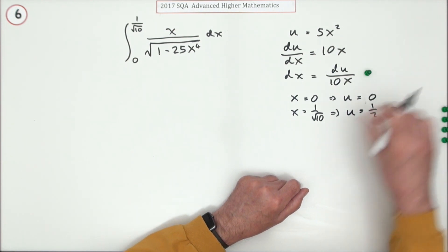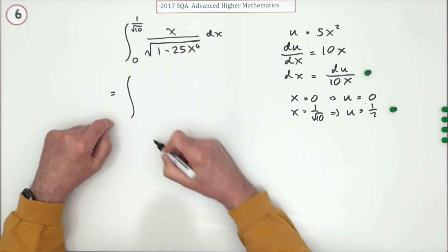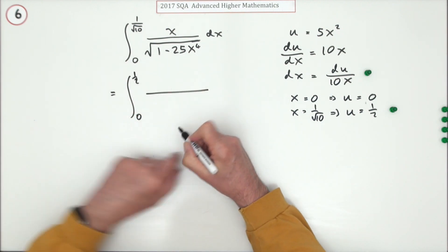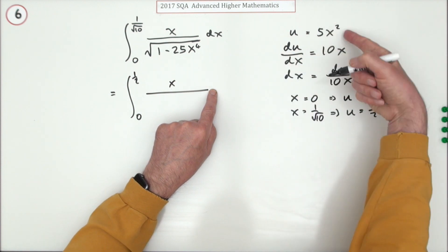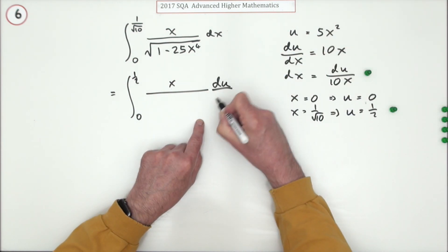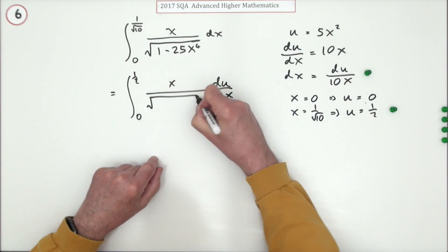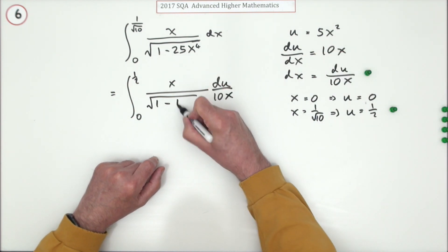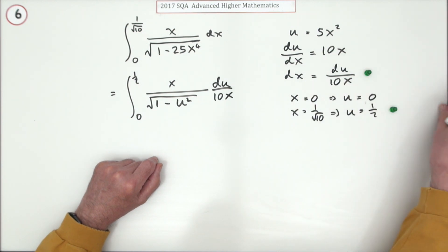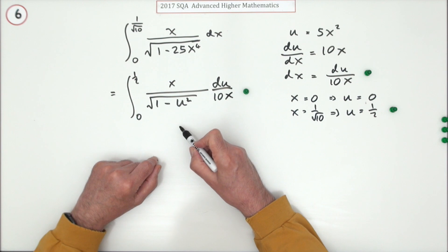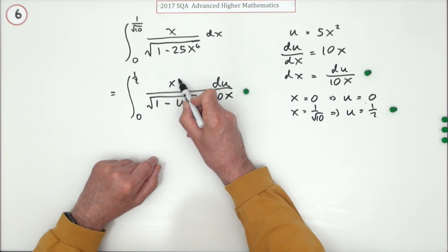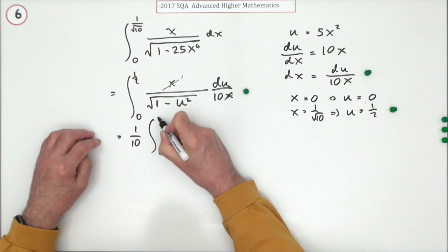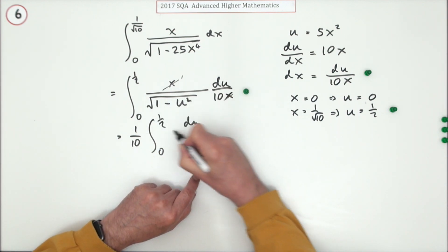Changing the limits is worth a mark. Now we start replacing: we're going from zero to a half. The dx gets replaced by du over 10x. The denominator — one minus five x squared — means that's the square of it, so that's u squared. Replacing the differential gets you the next mark, and then the x cancels with that x. Taking the 10 out gives a tenth of the integral from zero to a half.